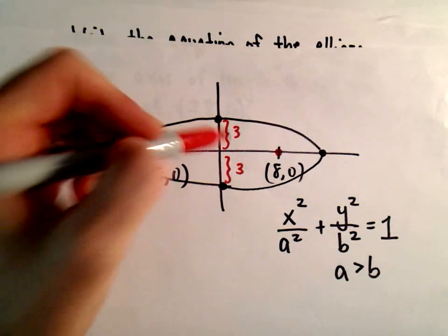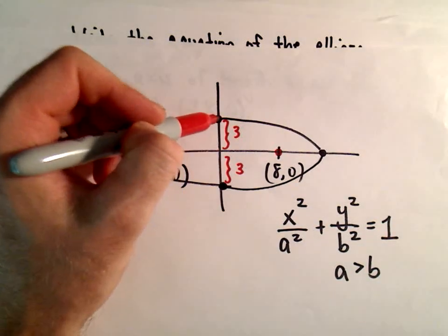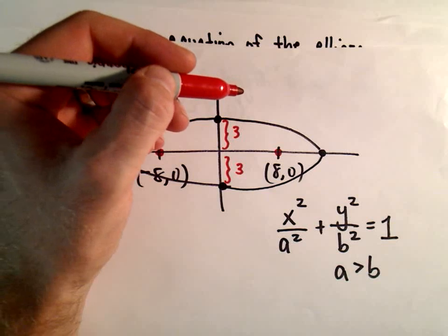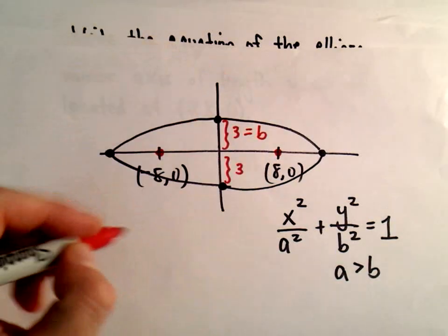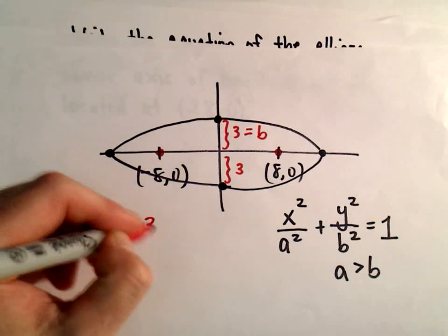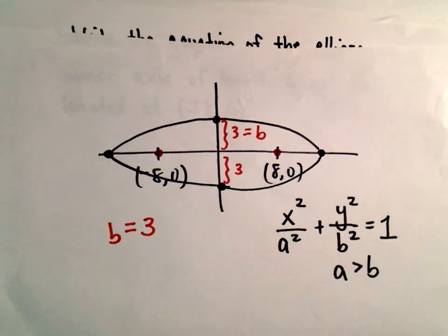The distance from the origin to one of our co-vertices, that's going to be our b value. So we know that we have a b value of 3, and we can plug that in no problem.